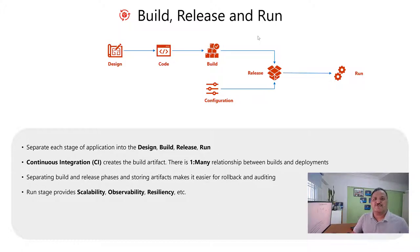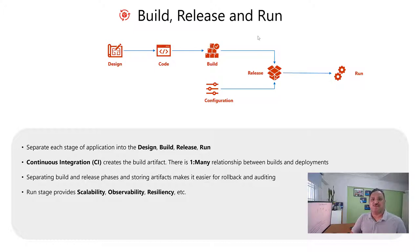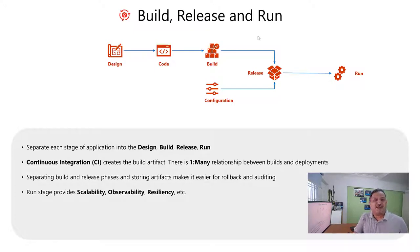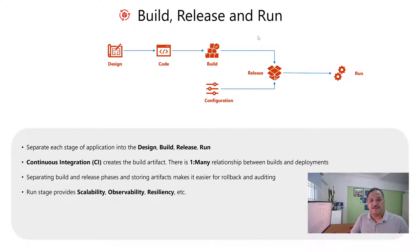If we look at a typical software design lifecycle, we go through these various stages, which is like designing the application, then writing the code for that application, building the application code to an artifact, and then releasing that application. As part of this release, we combine it with the configuration for each specific environment. When we combine the build and the configuration, the release is categorized and then we deploy that application code or the release artifact to the target environment, which forms the part of our run phase.